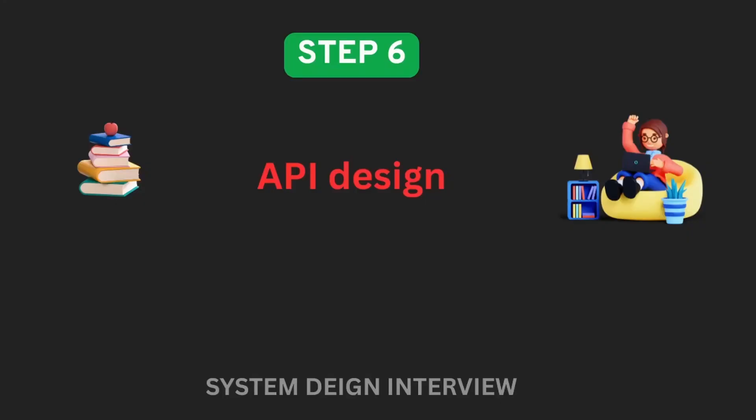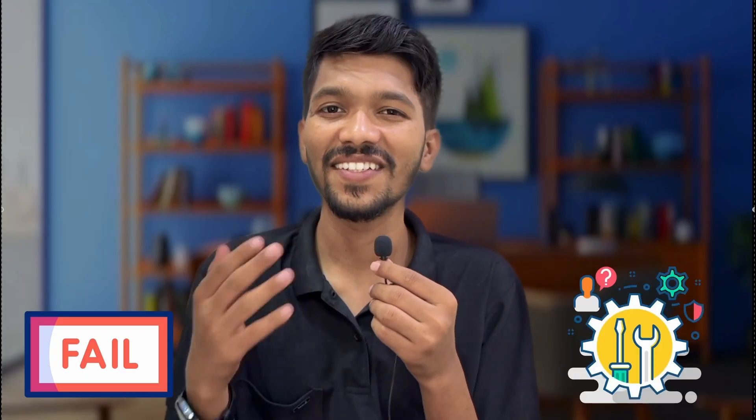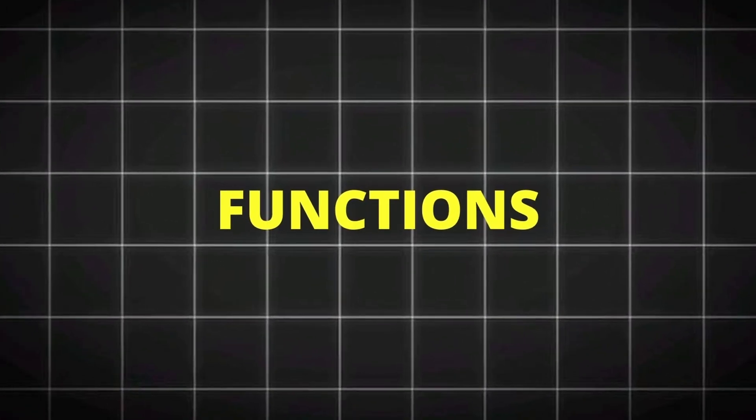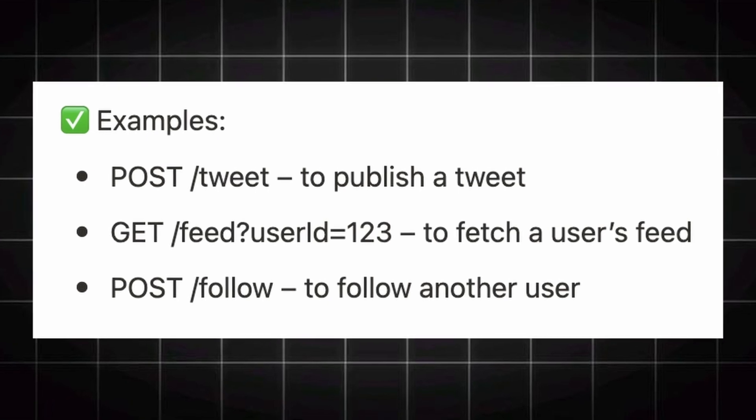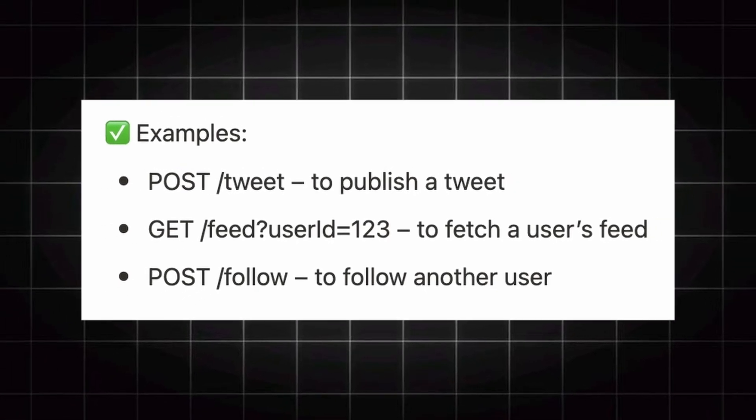Step 6 is Designing the APIs. APIs are the contract between the front-end, back-end, and services. Get them wrong and your system breaks; get them right and everything flows. Design a simple interface that meets all API requirements — parameters, functions, classes, and entities — without writing full code. For example, designing Twitter: POST /tweet to publish a tweet, and POST /follow to follow another user.